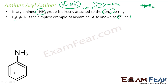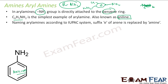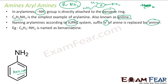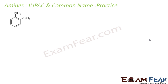The simplest aryl amine, C₆H₅NH₂, is also called aniline — that is the common name of this compound. To write the IUPAC name, instead of the ending 'e' in benzene, use the word 'amine.' So C₆H₅NH₂ comes from benzene, and it is called benzenamine. You replace the 'e' with 'amine' to get the IUPAC name.